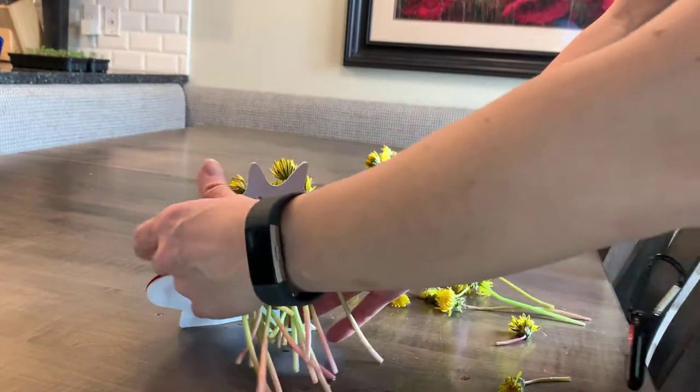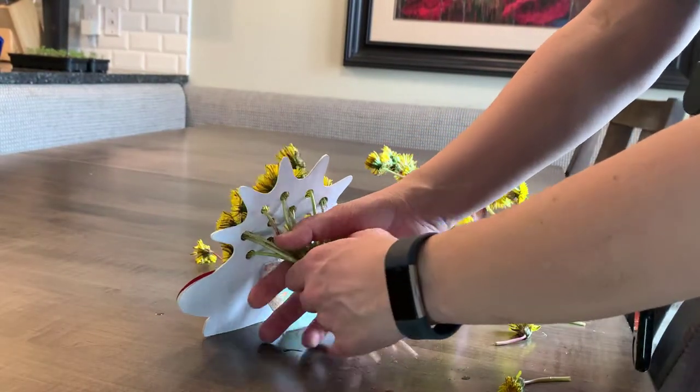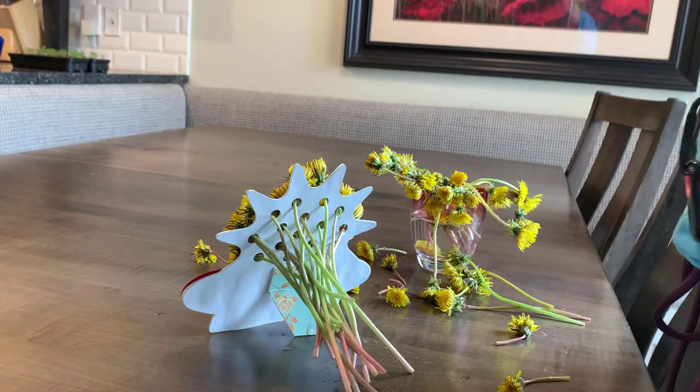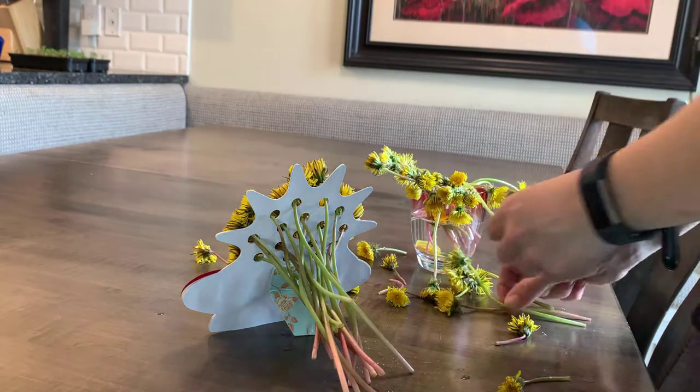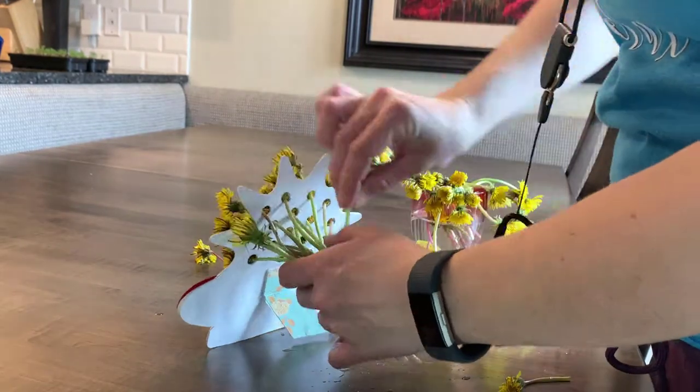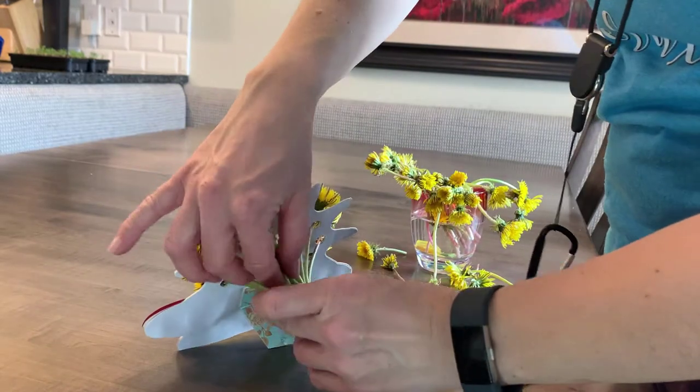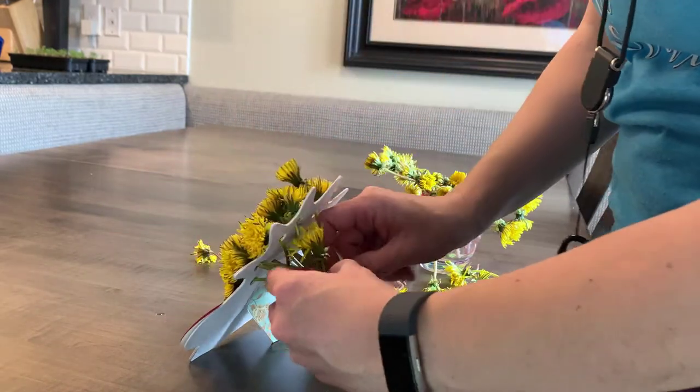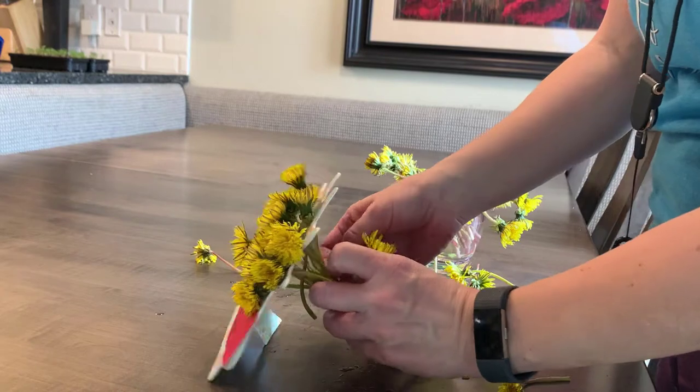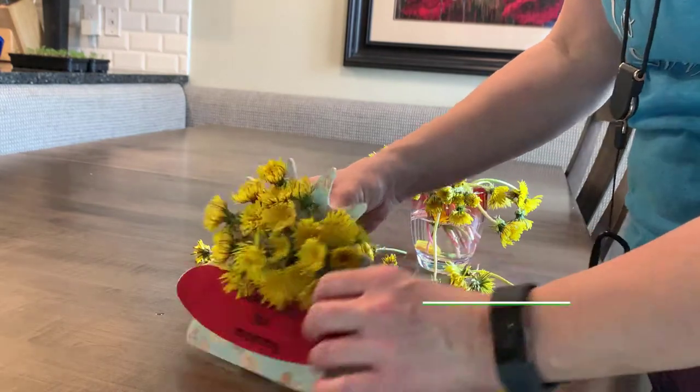Once all of the flowers are in, you can tie the stems up at the back. Anything will do - an elastic or a zip tie will work. In this case, I'm going to use an extra stem that I have left over from the flowers. And that's it. Our vase is done.